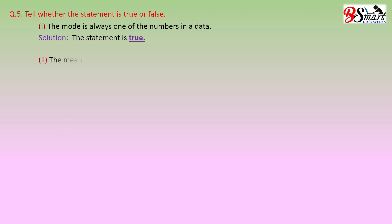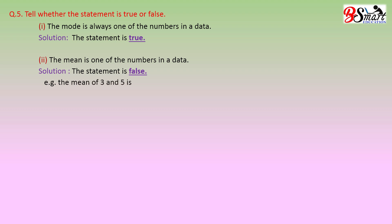Number 2: the mean is one of the numbers in a data. Solution: the statement is false. For example, the mean of 3 and 5 is (3 + 5) ÷ 2, which is 8 ÷ 2 = 4. And 4 is not a number in the data.